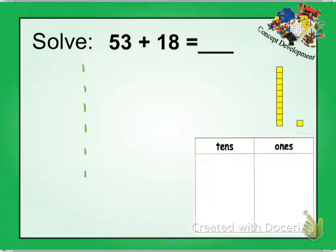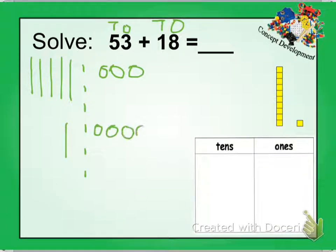So we're going to do 53. I know 53 has five tens and three ones, so now I'm going to draw that: one, two, three, four, five tens, and then my three ones—one, two, three ones. Now 18 has one ten but eight ones, so I'm going to draw that one ten and I'm going to draw my eight ones: one, two, three, four, five, six, seven, eight.